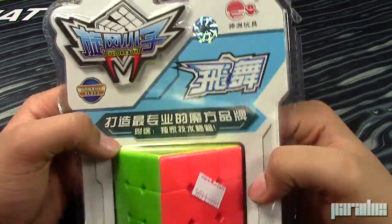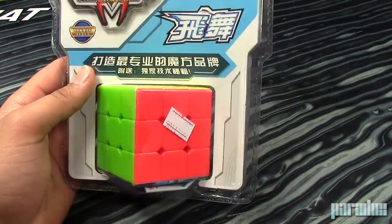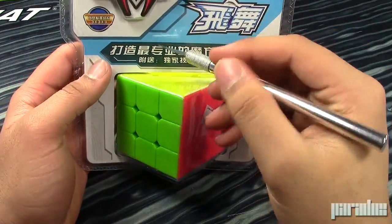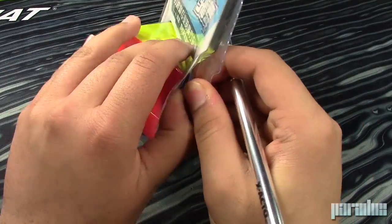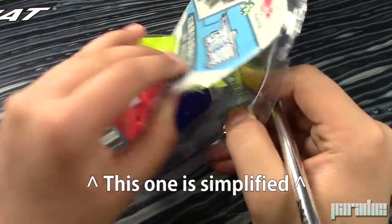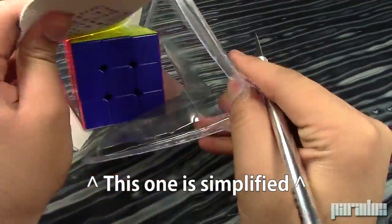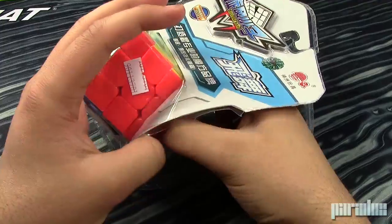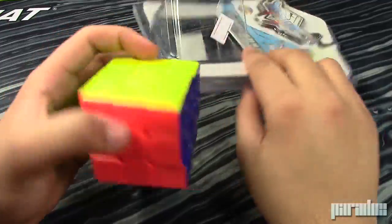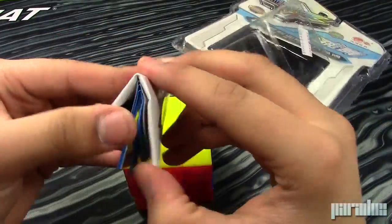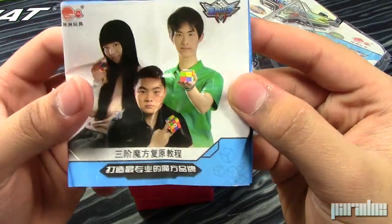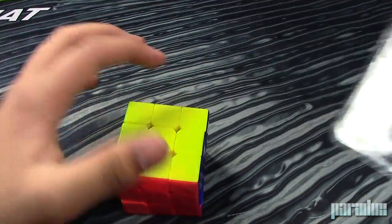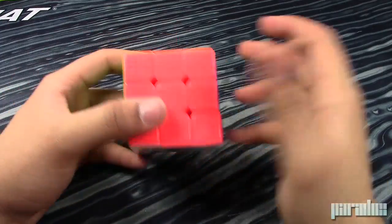Now moving on to the Cyclone Boys 3x3. And there's two versions of this actually. There's a simplified version and a strengthened edition, a strengthened version I think. And the strengthened one's supposed to be better than the simplified one, obviously. And it's a little bit more expensive too. So it comes with another one of these things. It has some people holding Cyclone Boys cubes.